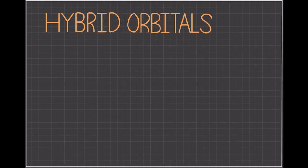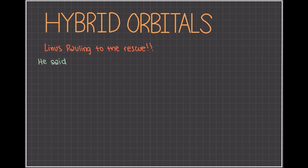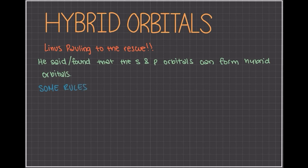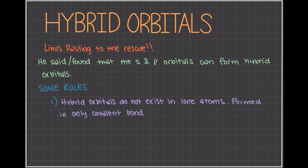The answer to this problem was answered in 1931 by Linus Pauling. He discovered and demonstrated the existence of the hybrid orbital, that S and P orbitals can form to create multiple hybrid orbitals. Now, some rules about hybrid orbitals. Hybrid orbitals do not exist in lone atoms. They are only formed in a covalent bond, such as in methane, here, where the carbon and the hydrogen covalently bond.